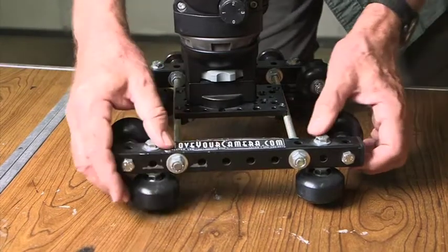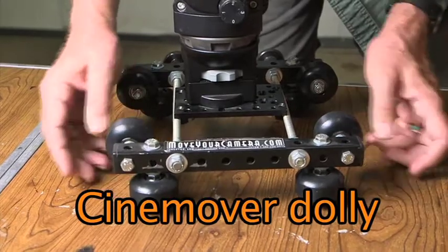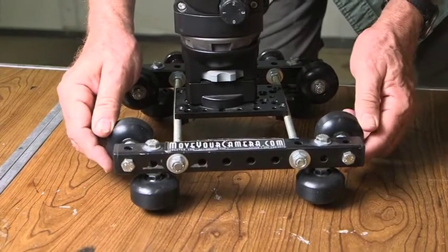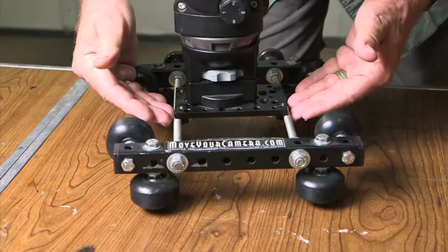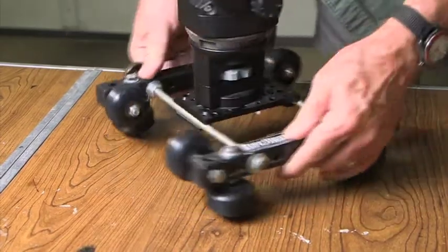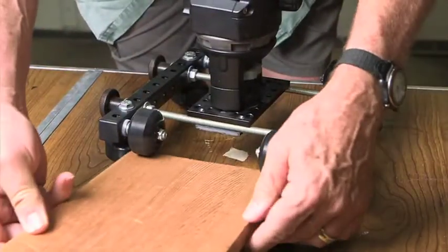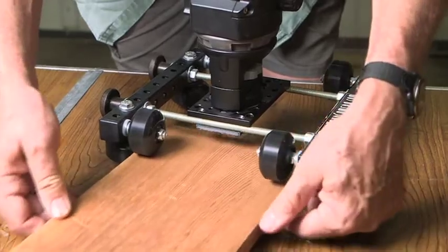The MoveYourCamera.com slider is an affordable and versatile piece of gear. It moves on eight precision rolling wheels and has a cheese plate camera mount. It's designed to roll on a surface like a piece of wood.